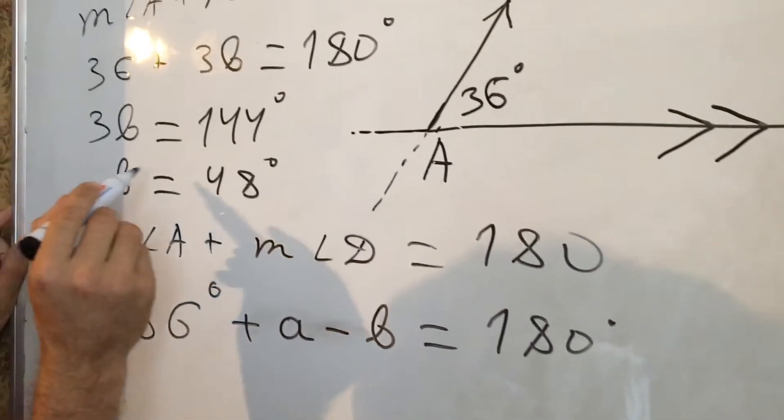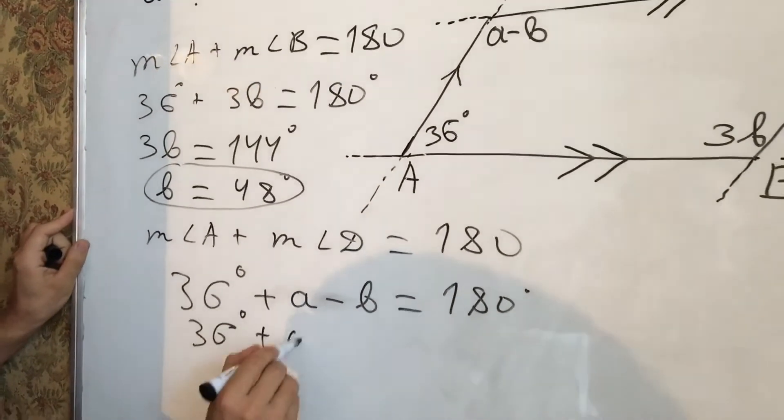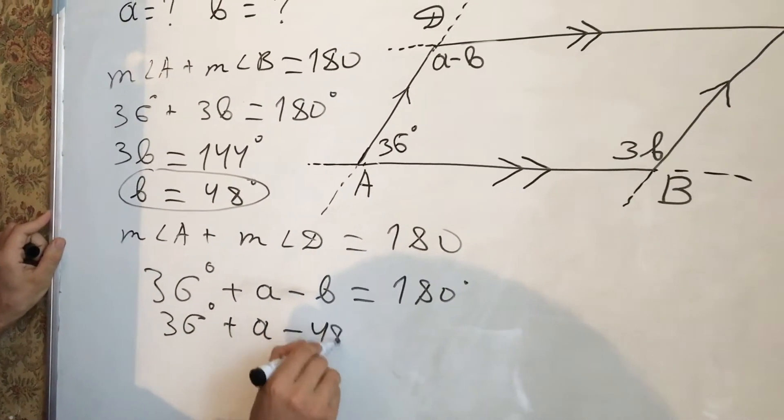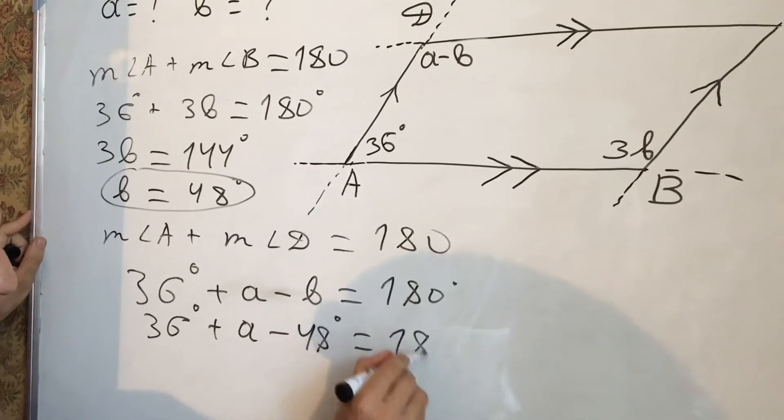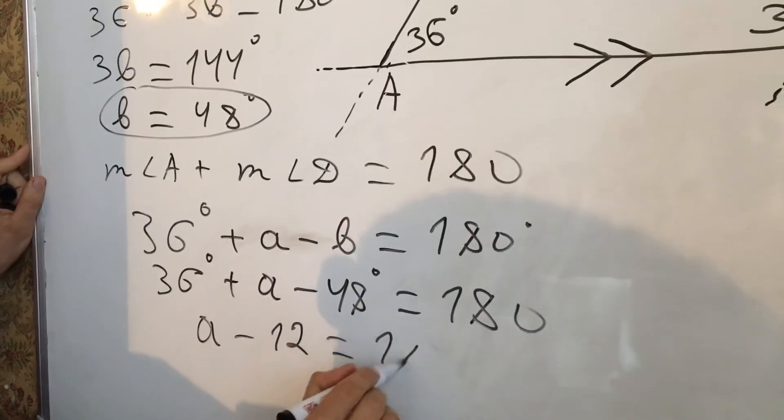B equal to 48 degrees. Then, 36 plus A minus 48 degrees equal to 180. A minus 12 equal to 180.